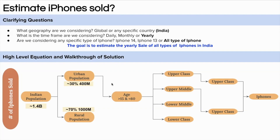We'll focus on the urban population since we're assuming people in rural areas won't be buying an iPhone. To calculate the people between age 15 to 60, let's assume people live uniformly distributed from 0 to 80 years. So the number of urban people between 15 and 60 is (60 − 15) ÷ 80 × 400 million = 45/80 × 400 million, which gives around 225 million urban people in the 15–60 age range.